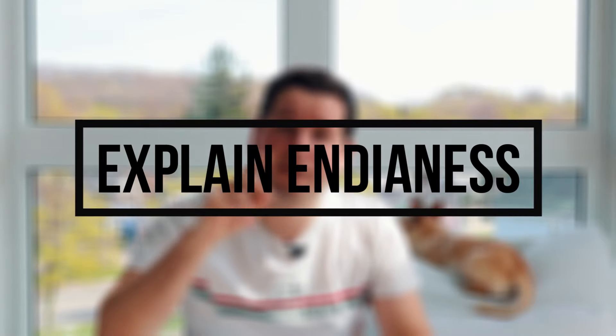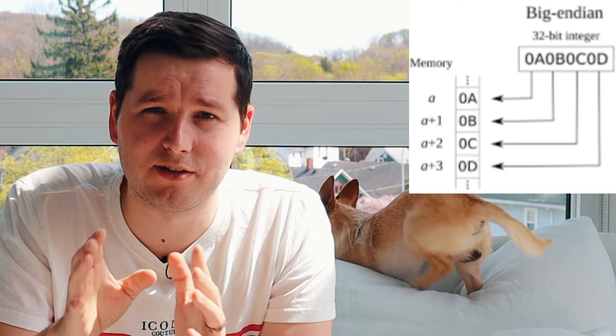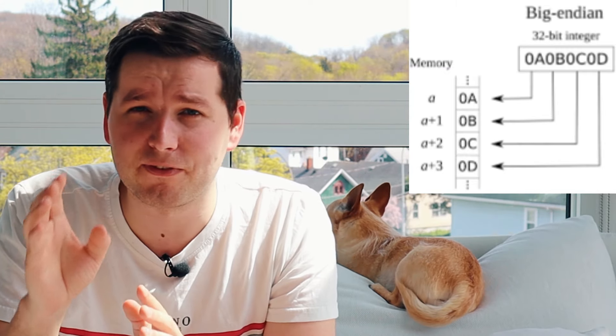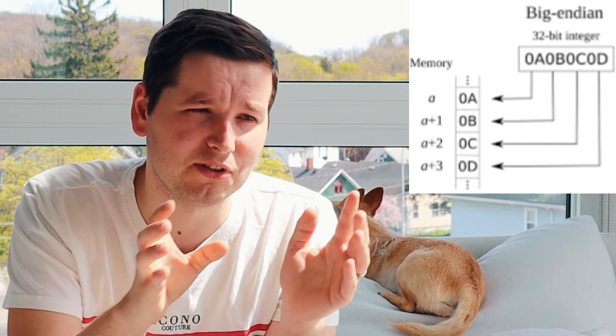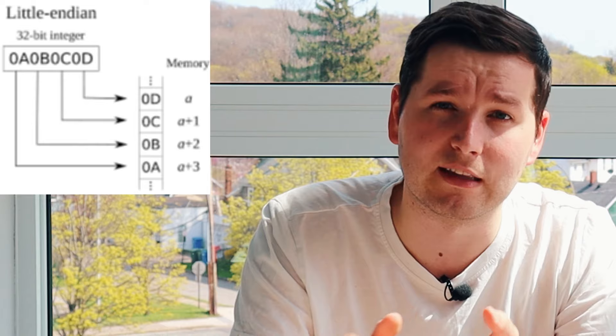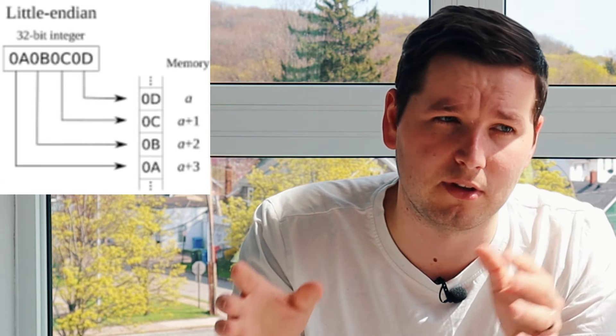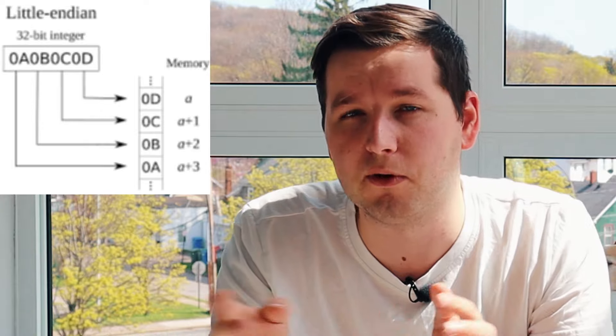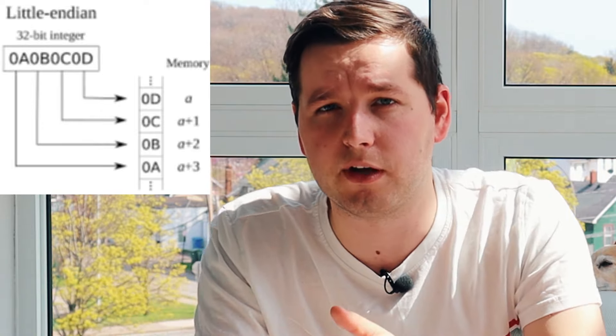What are little endian and big endian? Big endian means that the big end of the word — the highest byte, for example — is stored first in the memory address. Little endian means that the little end is stored first, so the lowest byte is stored first in that memory address.